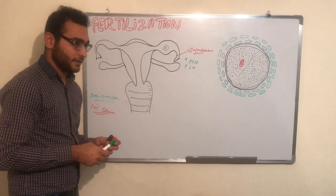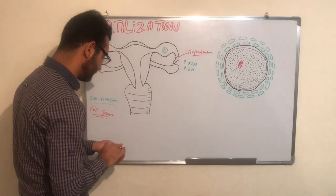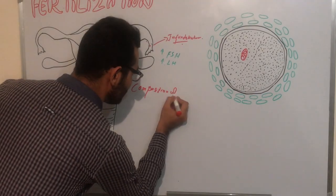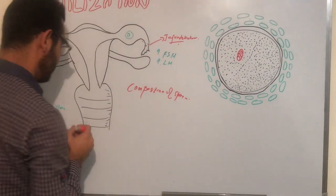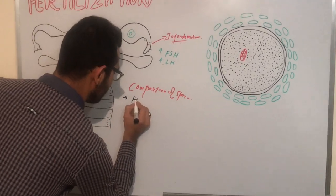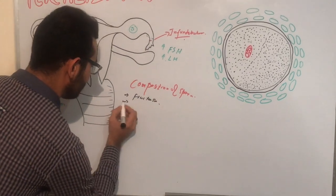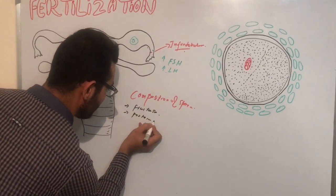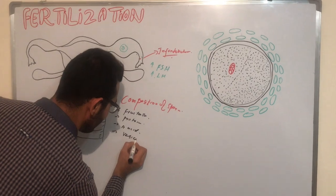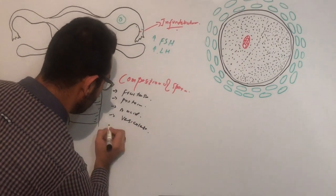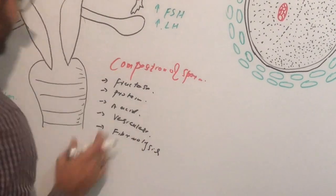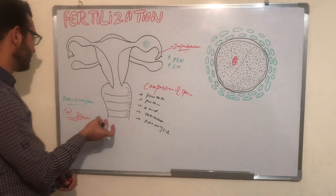The composition of sperm includes fructose, protein, amino acids, vesiculase enzyme, fibrinolysis, and chemicals like zinc.